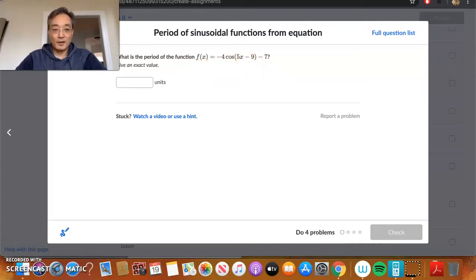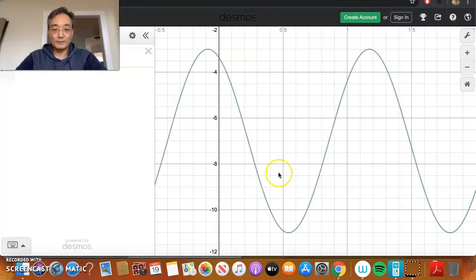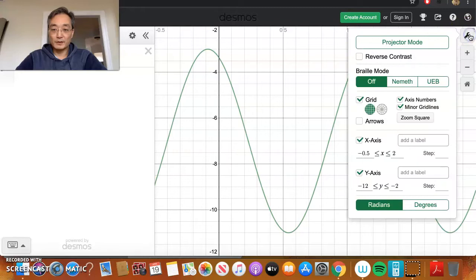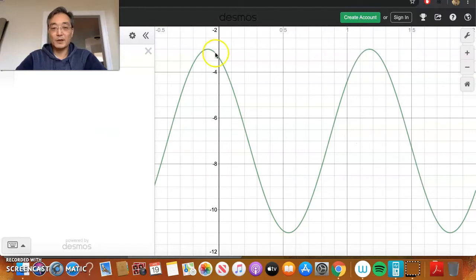However, we look, so if we take this function and we graph it, and let me show you my settings. So, here are my x values, go from negative 0.5 to positive 2, and my y values go from negative 12 to negative 2. Again, all in radians.